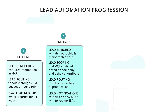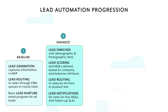Enhanced maturity: Once you have the baseline process established, you can begin to enhance your processes. This includes things like enriching the leads that come in with demographic and firmographic data, scoring leads based on a set of attributes, routing leads by territory or product line, and building notifications for qualified leads with built-in service level agreements.